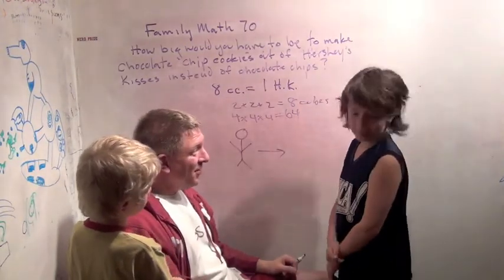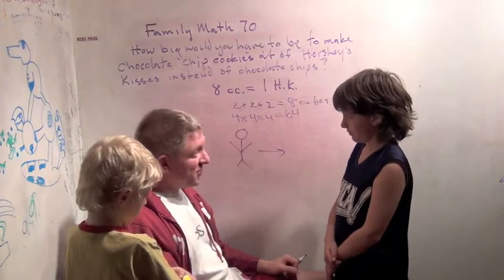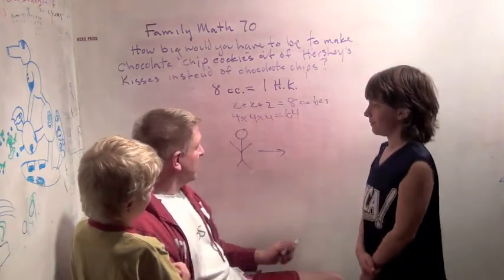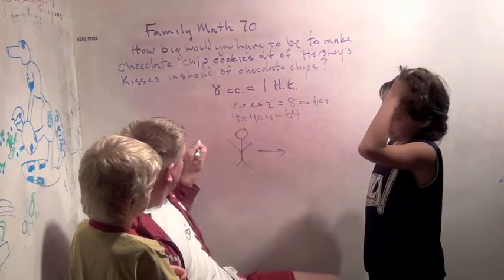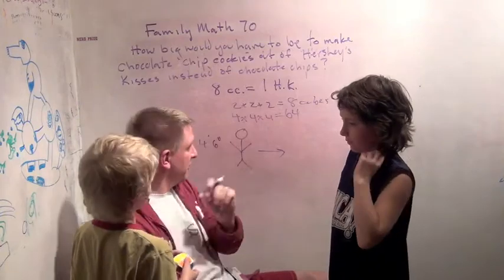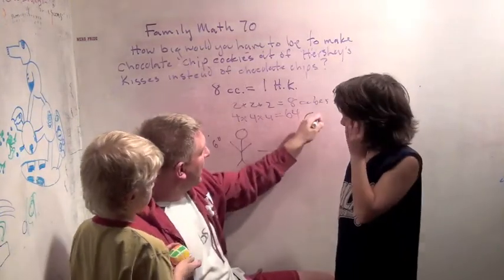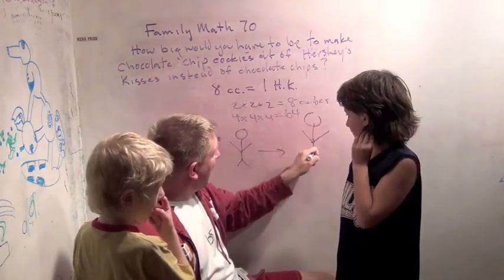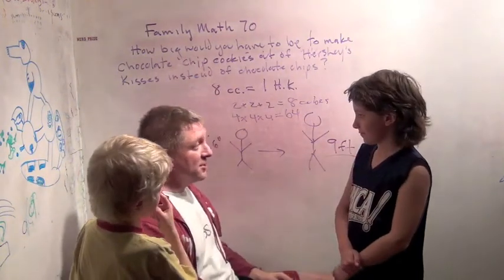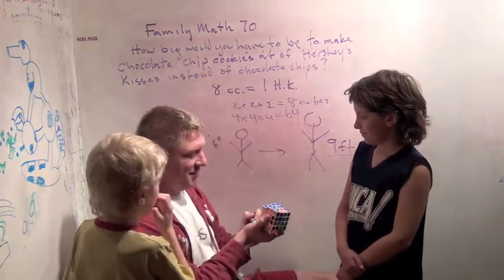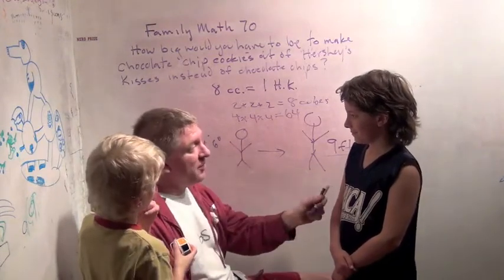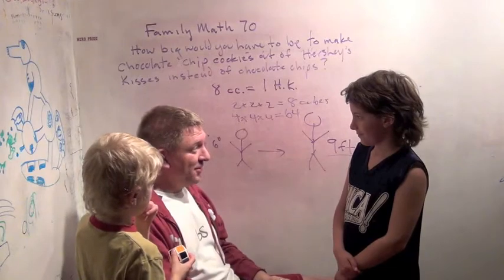So if we were all two times as tall as we are right now, we could do this. So you're both about four foot six, right? You're a little taller than four foot six. You're a little shorter than four foot six. So you would have to be nine feet tall to make chocolate chip cookies out of Hershey's Kisses and for that to make sense. Make sense? So I promise you, when you are both nine feet tall, we will do this.